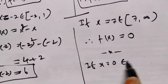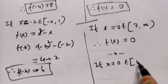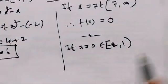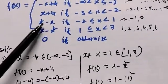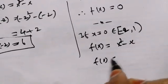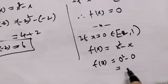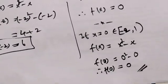So the function is 0. If x is equal to 0, 0 falls in the closed-open interval minus 2 to 1. The function looks like x squared minus x. So if I apply f of 0: 0 squared minus 0, which is 0 minus 0, equals 0. Therefore f of 0 is equal to 0.